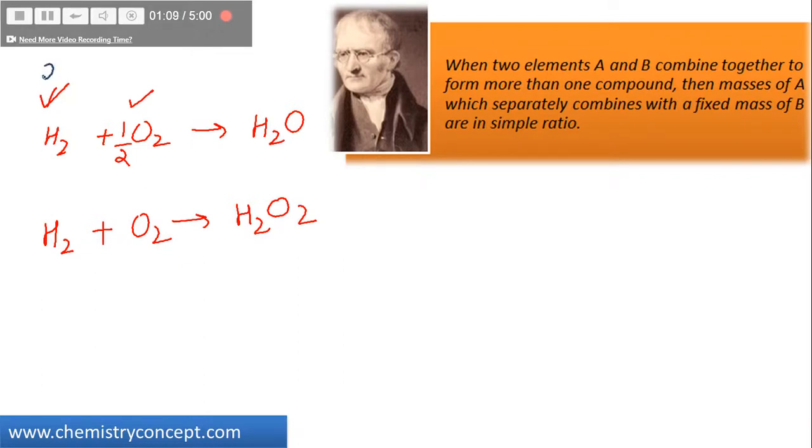In the first equation, 2g of hydrogen is reacting with 16g of oxygen. In another one, again 2g of hydrogen is reacting with 32g of oxygen. So the mass of that element which combines with the fixed mass of other elements - that means the mass of hydrogen is fixed here. That means we are talking about the mass of oxygen, which are always in simple ratio.